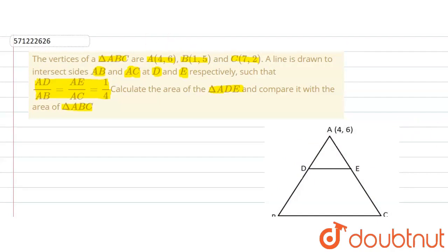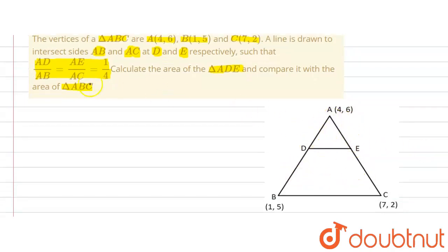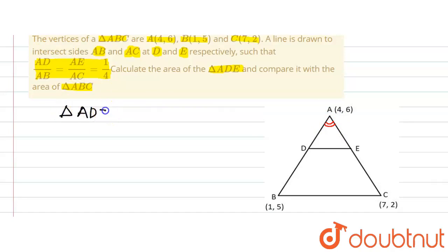Looking at triangles ADE and ABC, we are given that AD divided by AB is equal to AE divided by AC — that is, the ratio of two sides are equal. We can also observe that angle DAE of triangle ADE and angle BAC of triangle ABC will be equal because they are common. So by the Side-Angle-Side similarity criterion, we can say that triangle ADE is similar to triangle ABC.